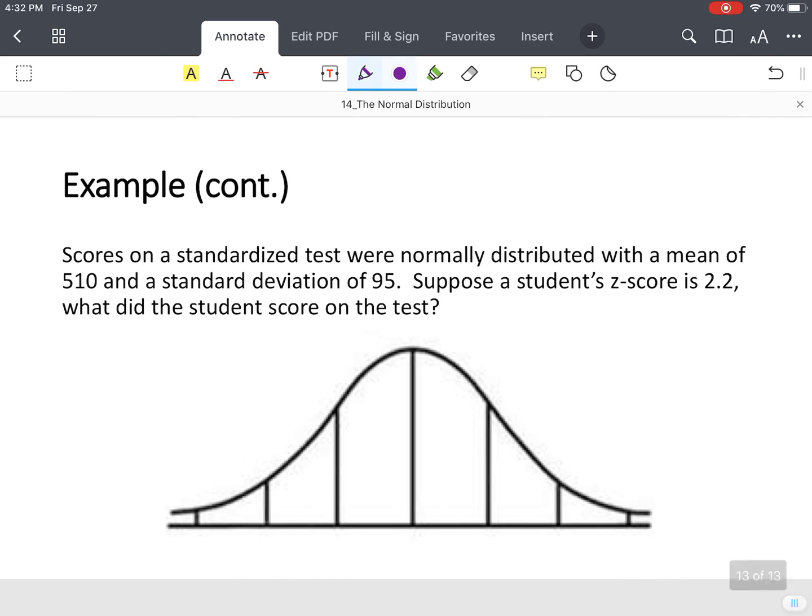All right, so this next one, we're going to do a little bit of algebra. Same exact scale, but in this case, suppose a student's z-score was 2.2. We want to know what that student scored on this exam. So again, 510 is the mean, 605 is one standard deviation above, 700 is two standard deviations above, 795 is three standard deviations above. Below, we have 415, 320, and 225.